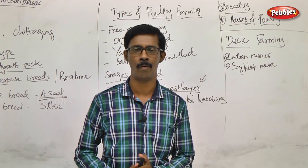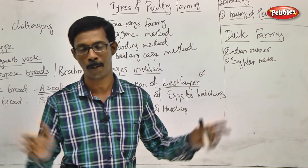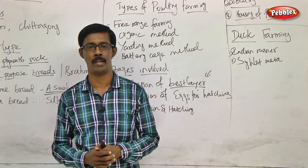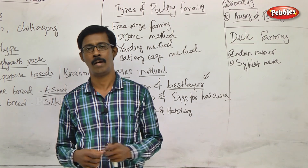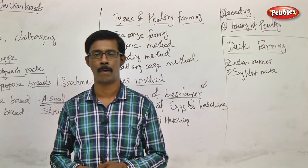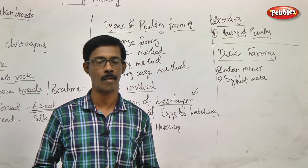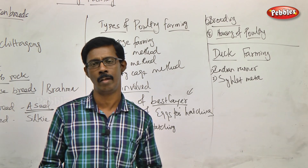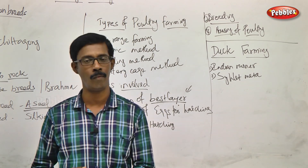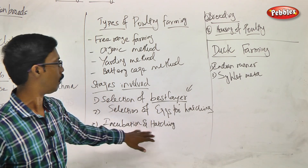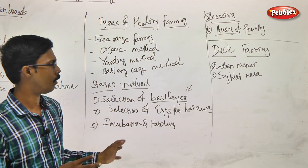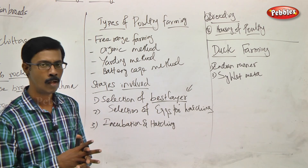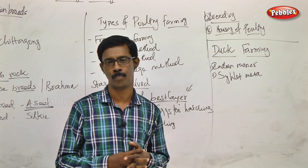The other method is artificial incubation in a controlled environment. An incubator is the instrument used. We set the required temperature in the incubator to carry out the hatching procedure under controlled conditions.